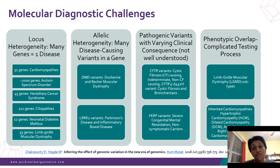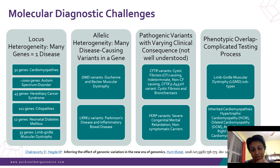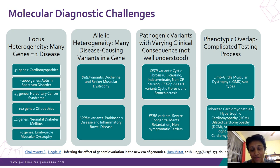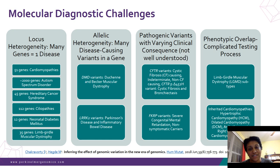Pathogenic variants of varying clinical consequence are not well understood. Cystic fibrosis is a great example of the complexity of variants and their impact on human health. FKRP, a neuromuscular disorder, has similar complexity, and phenotypic overlap — as seen with limb girdle muscular dystrophies and inherited cardiomyopathies — makes this even more confusing. Given this complexity, we expect clinical reports to be clear and succinct.